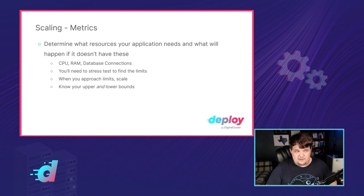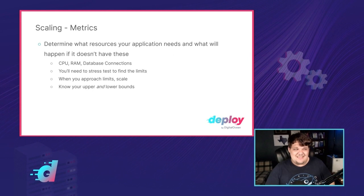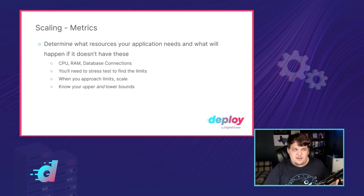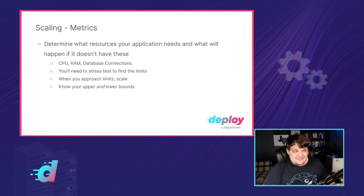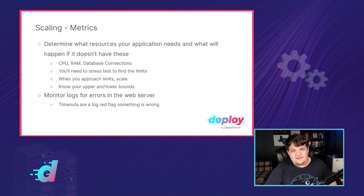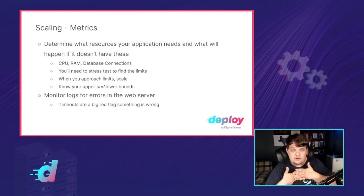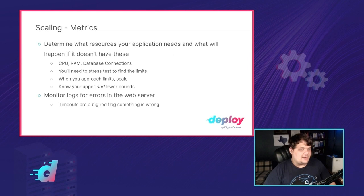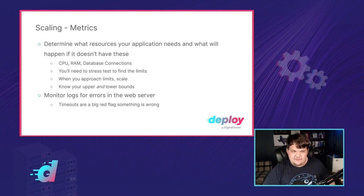Know your upper and lower bounds. Knowing your lower bounds is really valuable — do you need six servers with 48 CPUs each for your little application? Maybe you do once a year on Black Friday, but you probably don't need that on April 23rd. Don't do that — it's a waste of money and resources. Also, monitor your logs for errors in the web server. Timeouts are a big red flag. When you start seeing timeouts, you know something's up. Sometimes scaling helps you mitigate issues — scaling up can buy you some time instead of facing an outage.